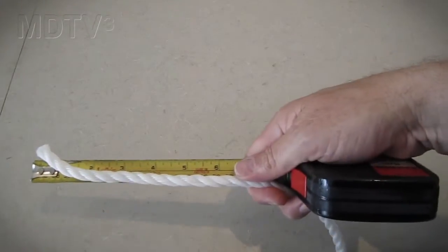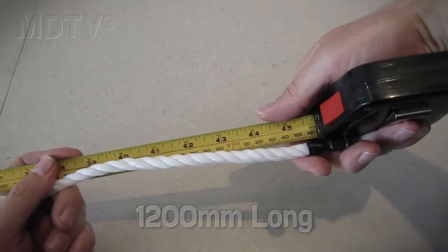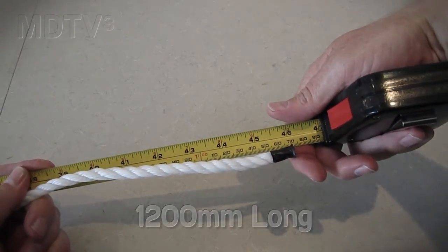Tape the rope end tight to make it easy to push through the holes. Cut two pieces of rope approximately 1200 millimeters long. Any excess will be cut off later.